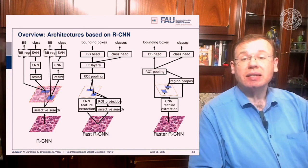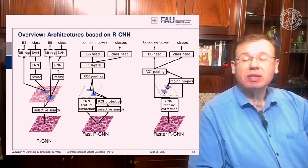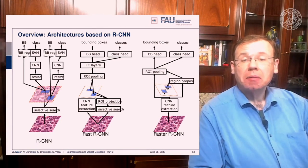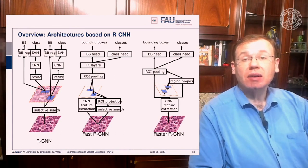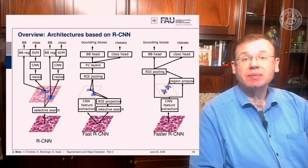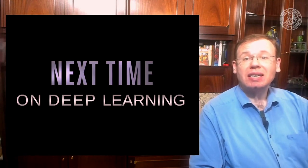Faster RCNN goes to a truly end-to-end system: CNN feature extraction is followed by a region proposal network on those features, then ROI pooling, and finally the bounding box prediction head and classification head — much faster in both training and inference. Still, we are not able to do real-time classification, which is why next time we will talk about single shot detectors that will be able to do this.